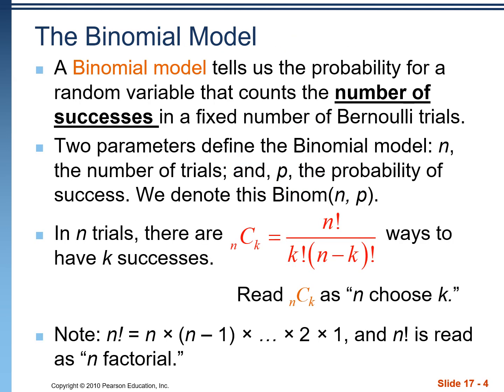The second of the two models is a binomial model. And the difference with a binomial model is that we're given a fixed number of trials, and we're looking for a certain number of successes in a fixed number of Bernoulli trials.